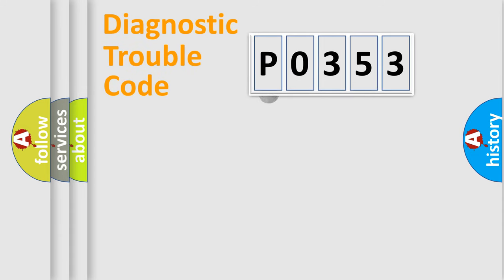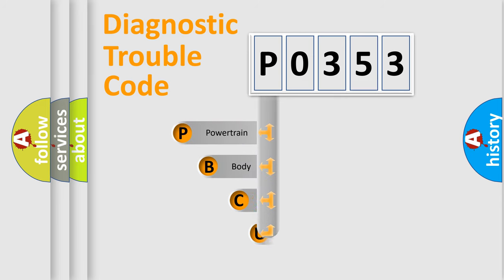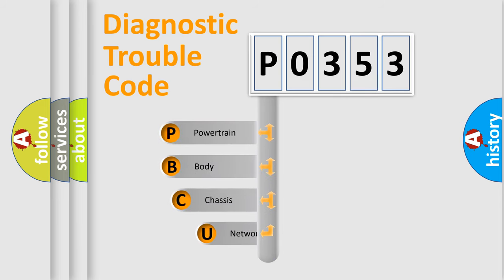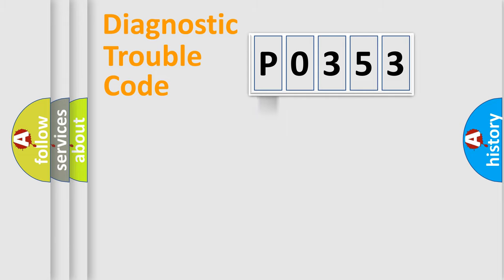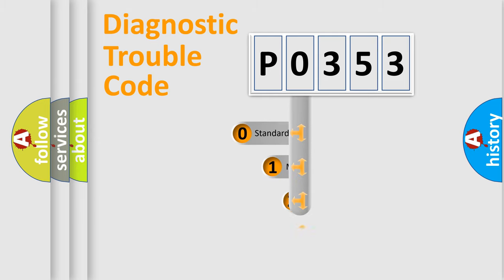First, let's look at the history of diagnostic fault code composition according to the OBD2 protocol. We divide the electric system of an automobile into four basic units: powertrain, body, chassis, and network. This distribution is defined in the first character of the code.